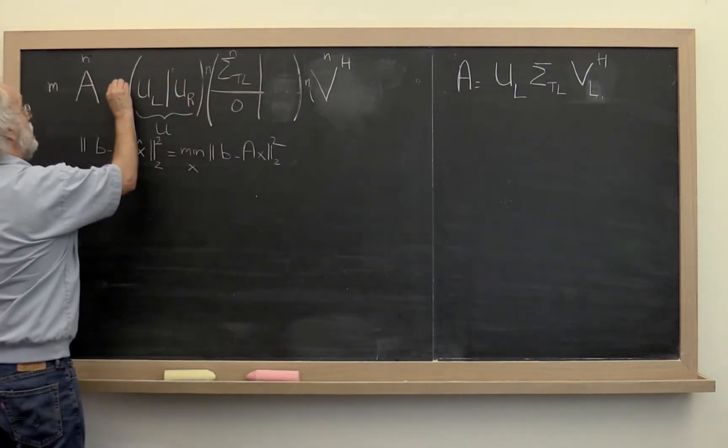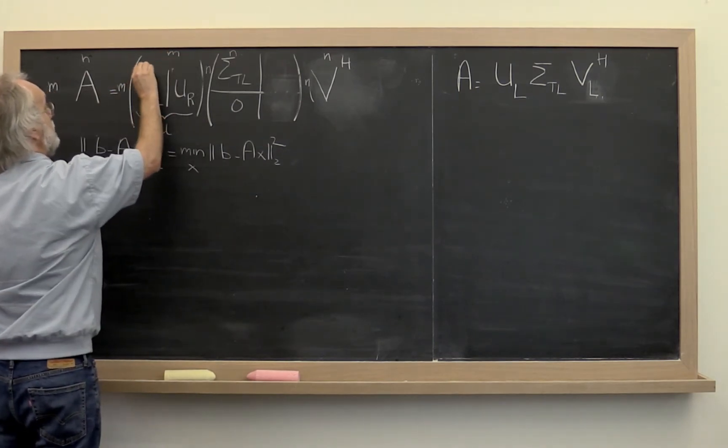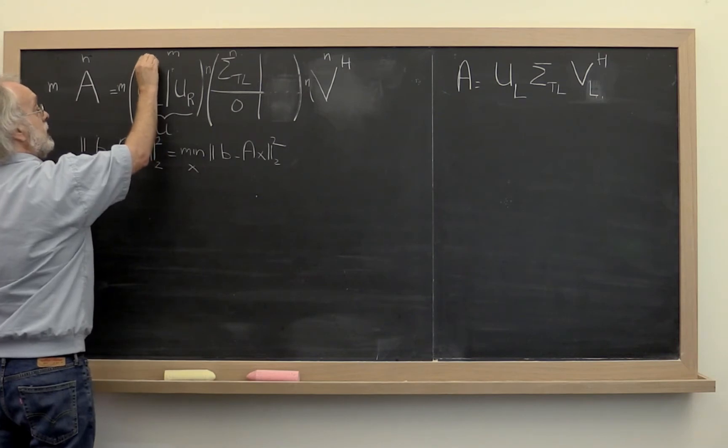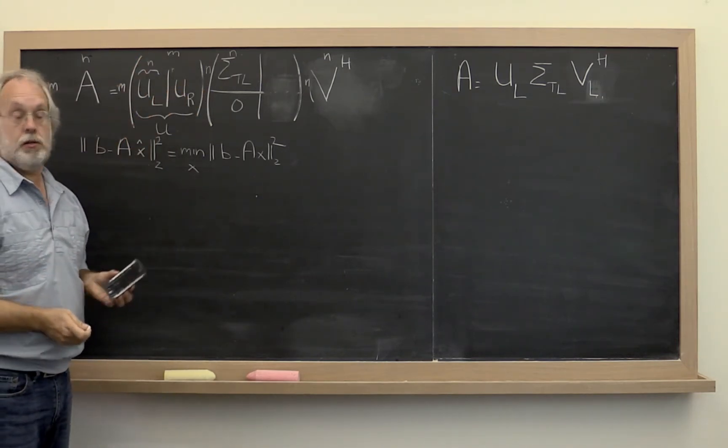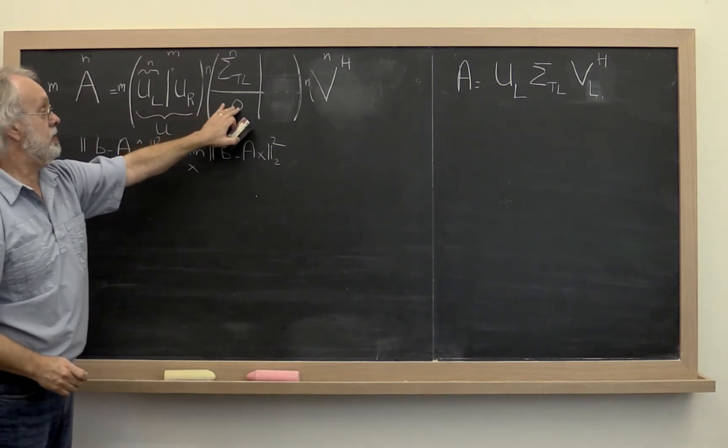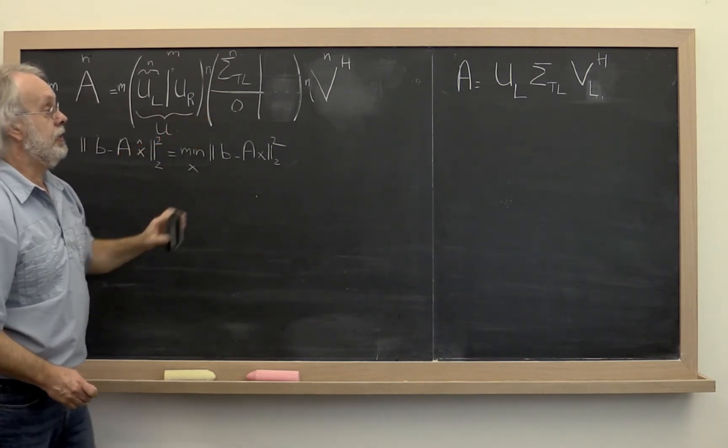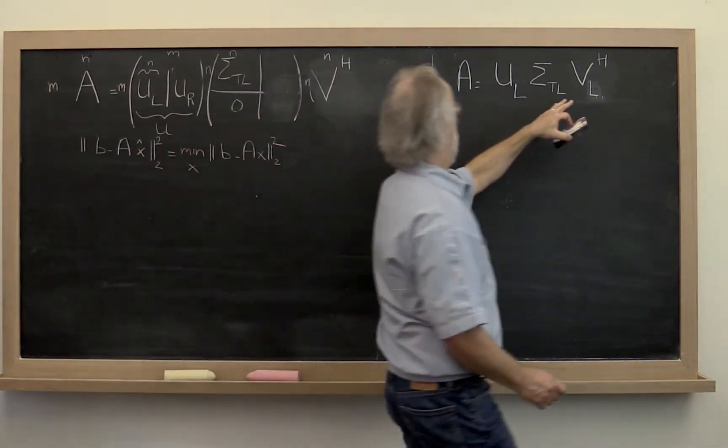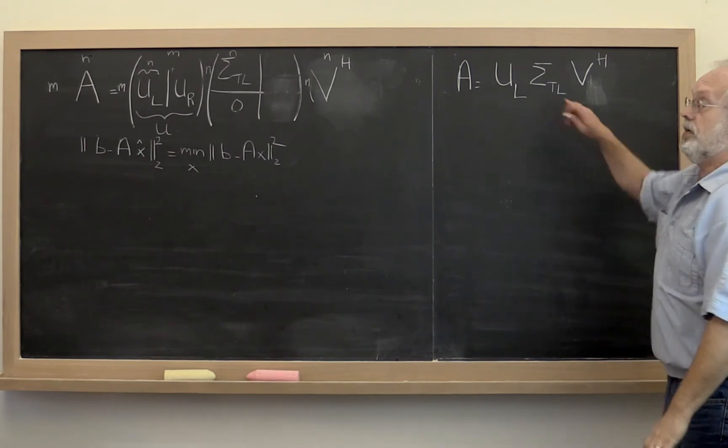And this now is an M by N matrix, which means that this submatrix has N columns and then U is the rest of the columns. But that multiplies this submatrix that's all zeros here. Therefore the reduced singular value decomposition is just given as such.